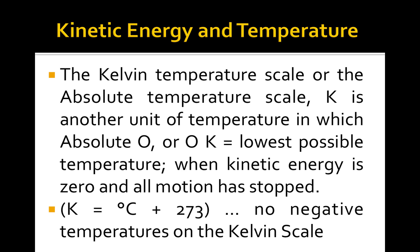To convert degrees Celsius to Kelvin, all you have to do is add 273 to it. Kelvin equals degrees Celsius plus 273. There are no negative temperatures on the Kelvin scale.